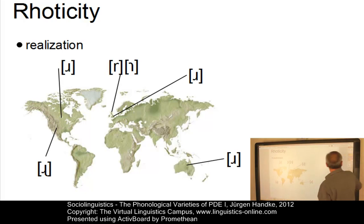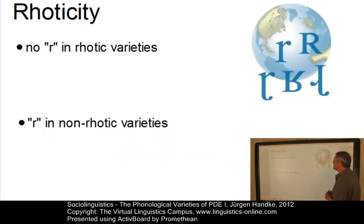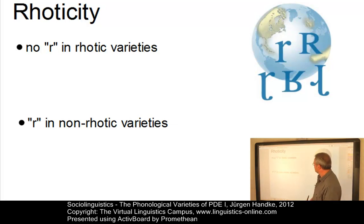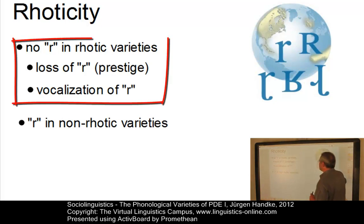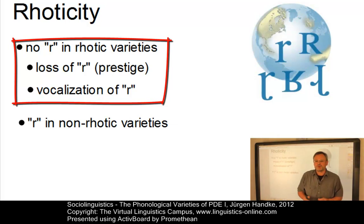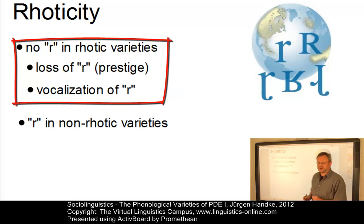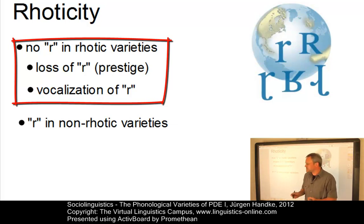Another problem occurs if we look at the varieties in particular. No variety of present-day English is totally rhotic or totally non-rhotic. For example, in the rhotic varieties, it has been shown that the use of the post-vocalic R may be dependent on factors such as social prestige, as shown by William Labov in his studies about the use of R in New York City, or on geographical factors — for example, speakers from Alabama vocalize the R before vowels.